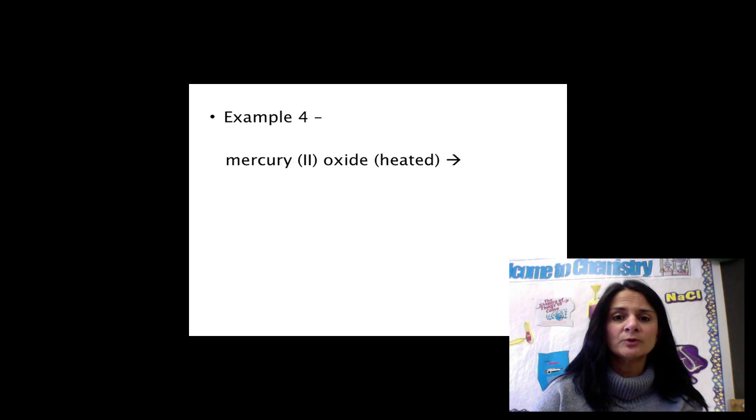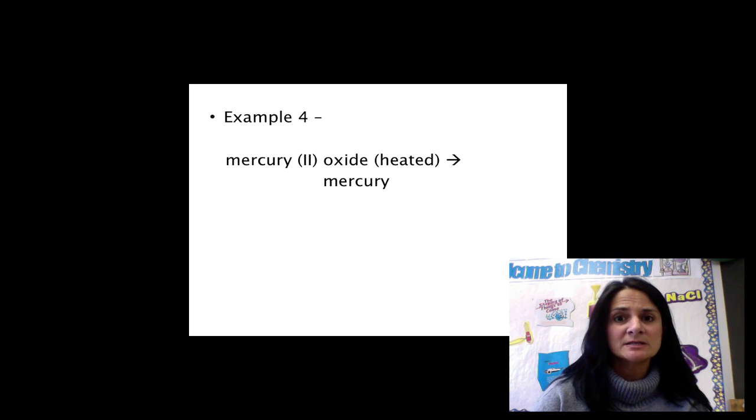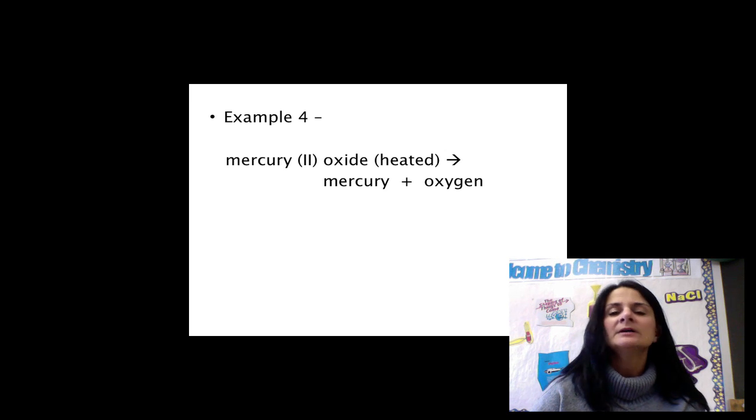Moving on to example 4. In this case, I have mercury 2 oxide, and I am told that it is heated. With only one reactant, this must be a decomposition reaction. Mercury 2 oxide will break down into the elements mercury and oxygen. Whenever you see a form of energy that's given to you in the reaction, that's a hint to you that it's a decomposition reaction in most instances. Decomposition reactions require some form of energy to occur. In this case, heating will cause this decomposition.